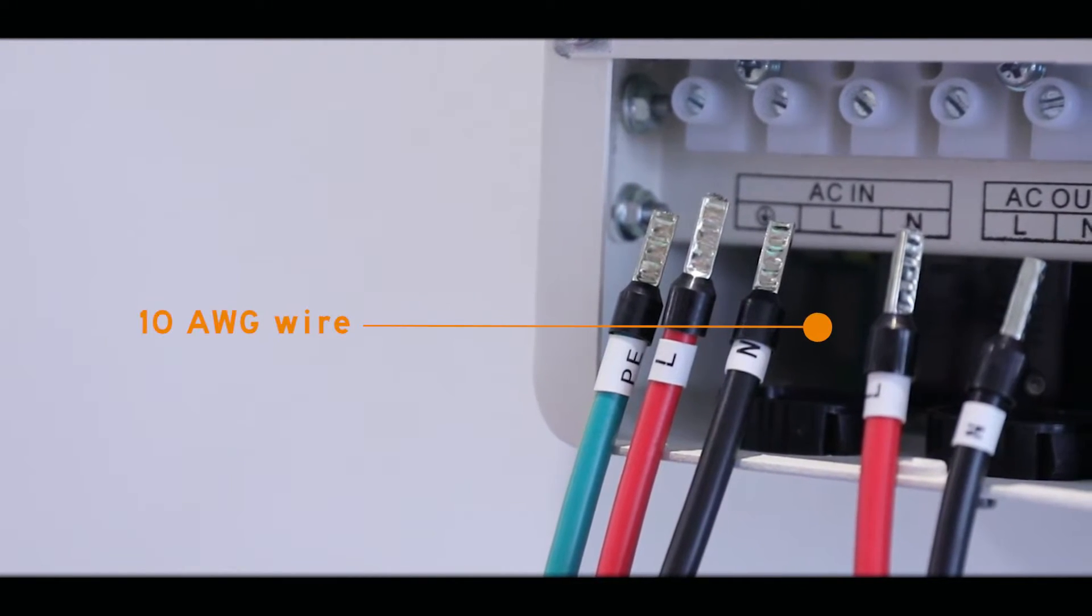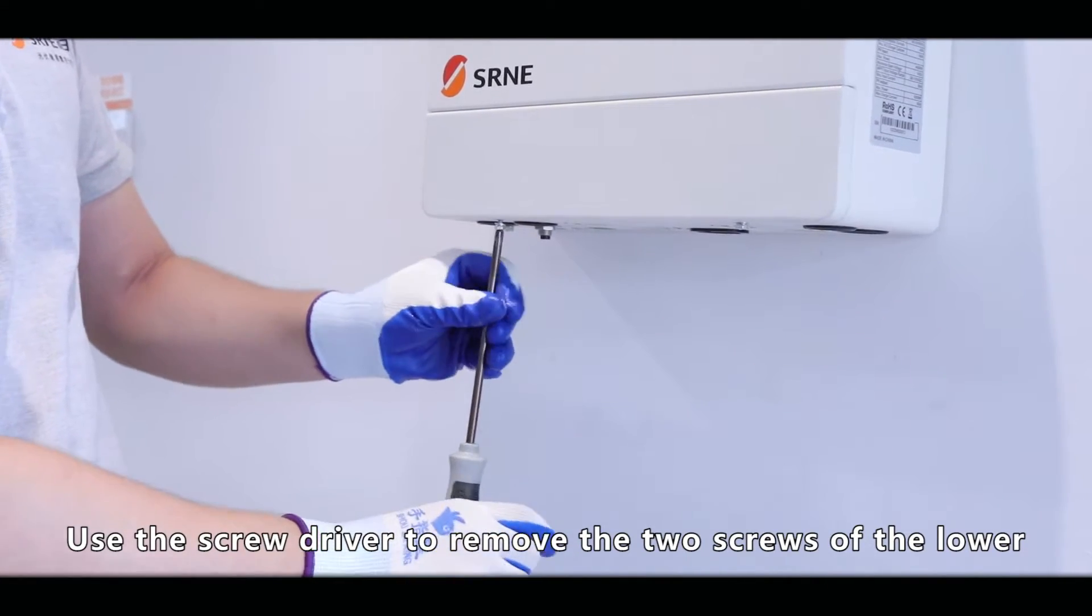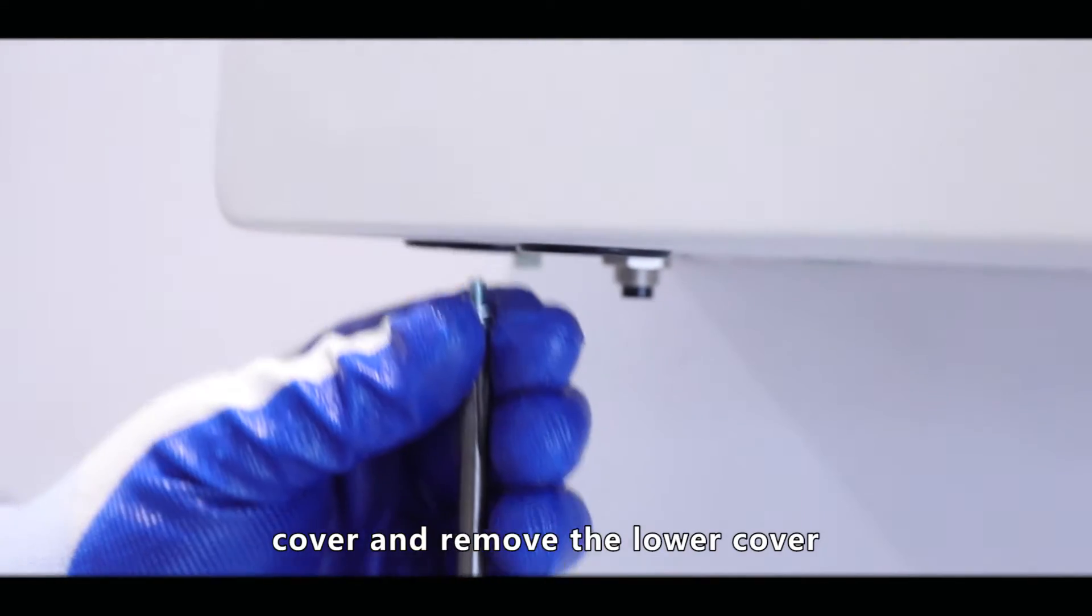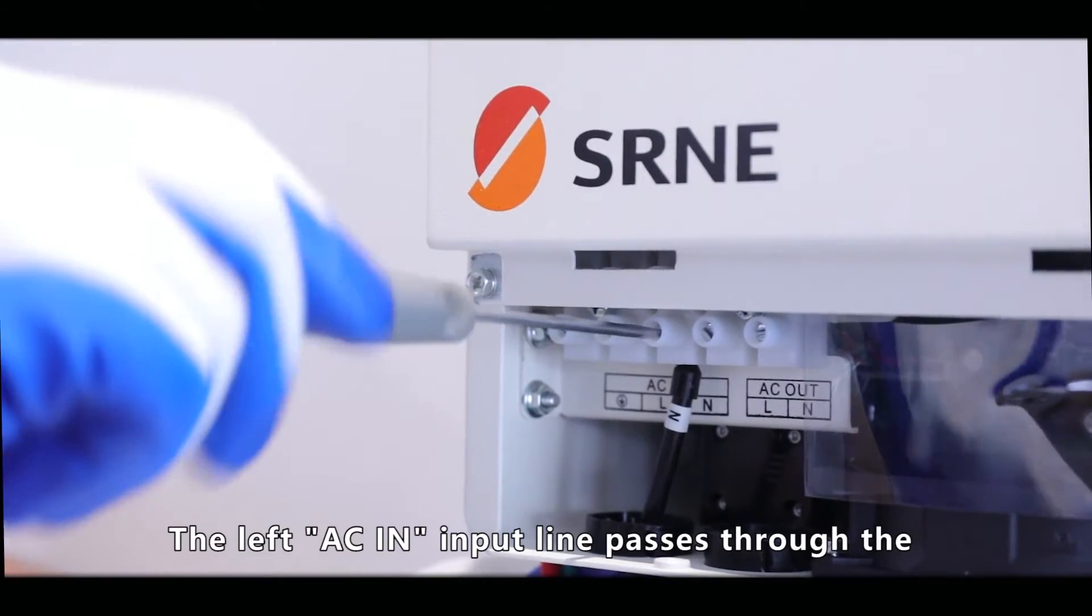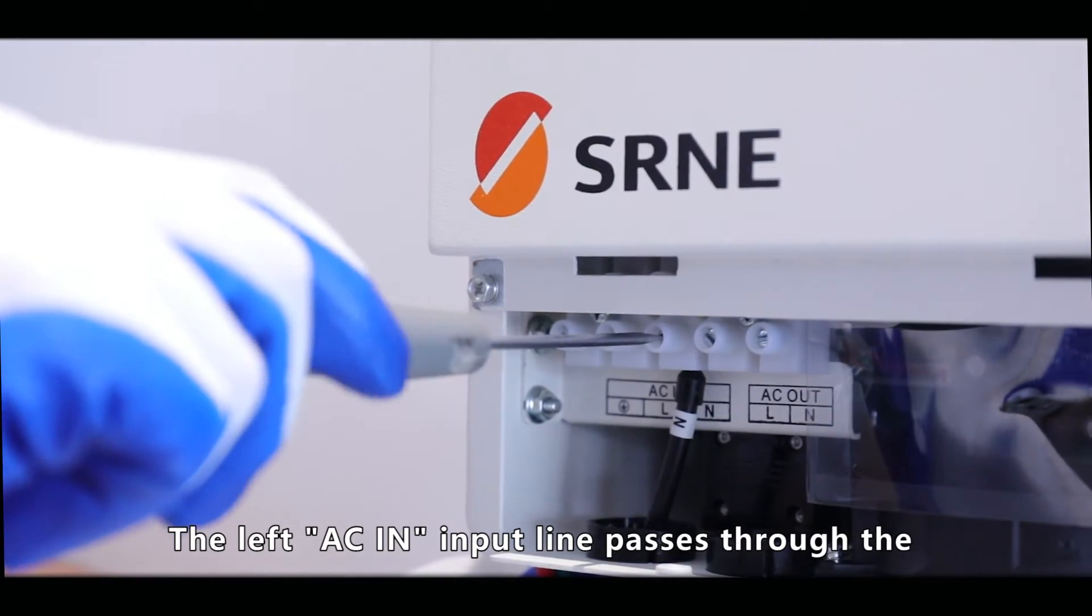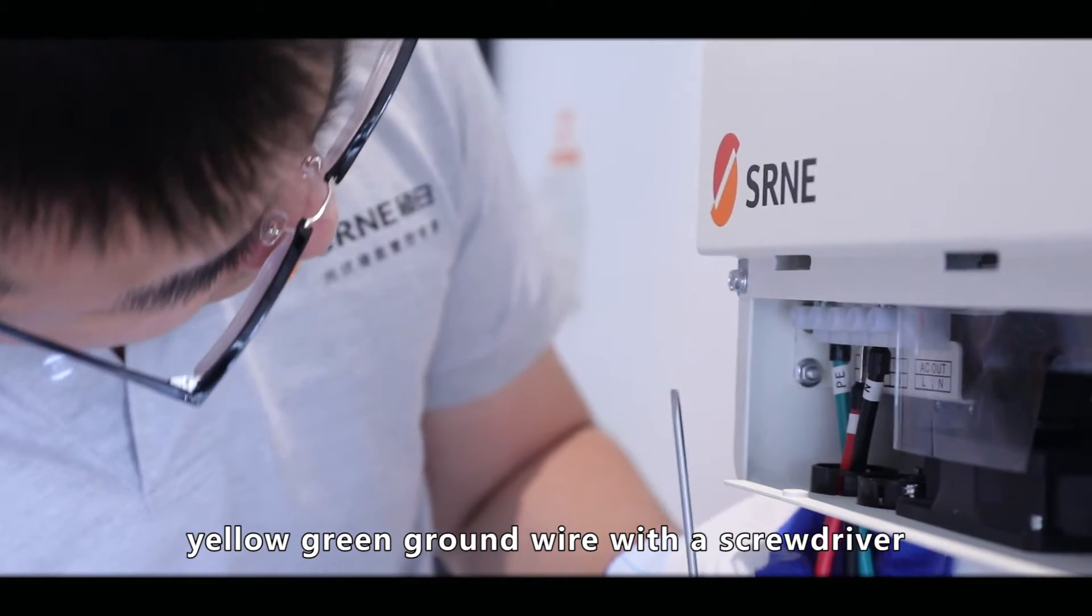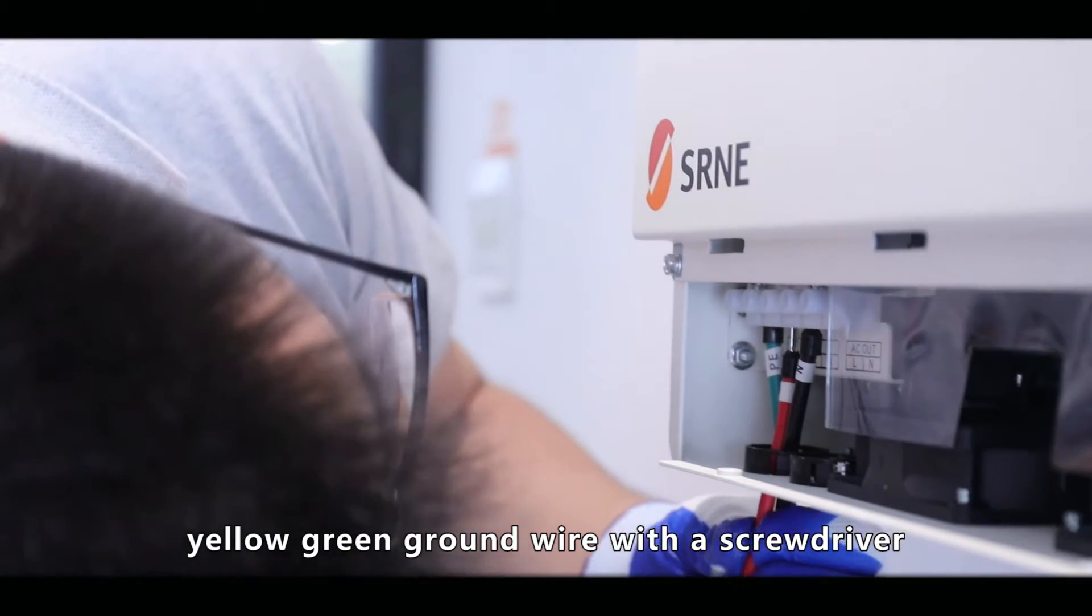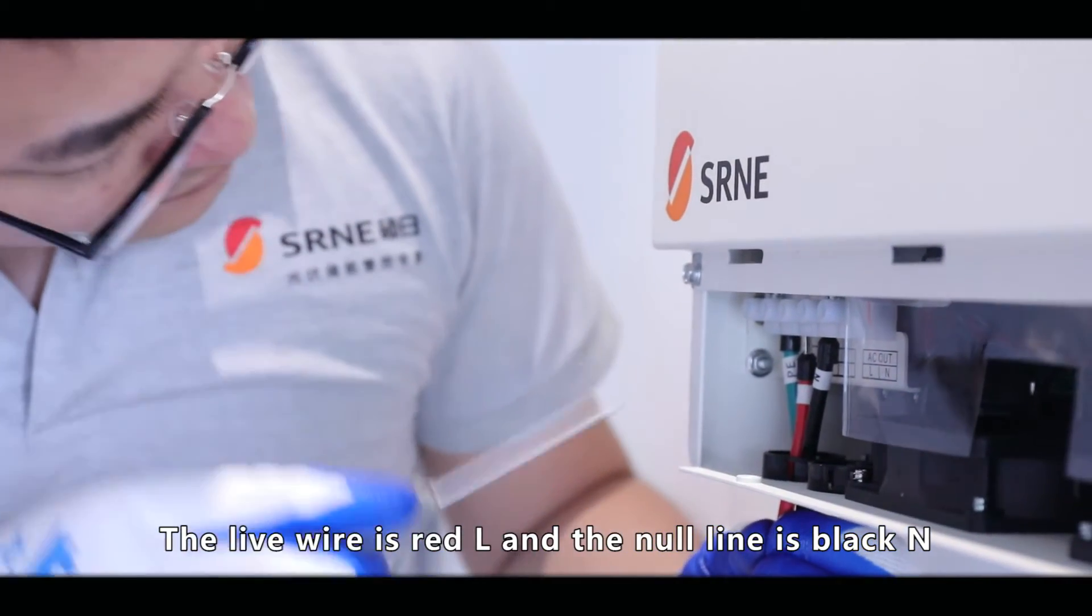Wiring: Use the screwdriver to remove the two screws of the lower cover and remove the lower cover. The left AC input line passes through the black guard ring and is connected to the yellow-green ground wire with the screwdriver. The live wire is red L and the null line is black N.